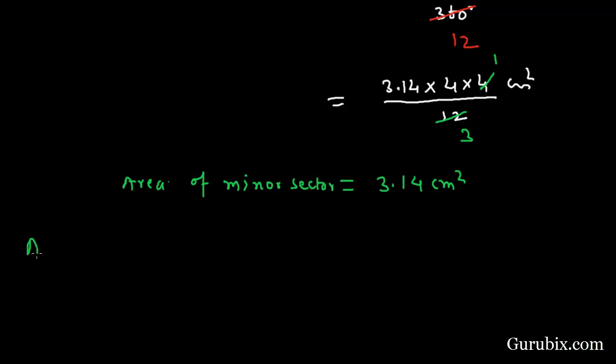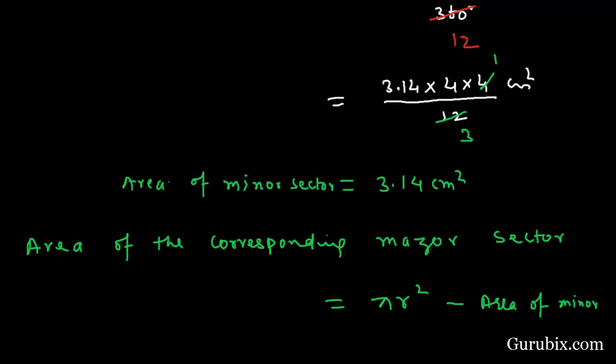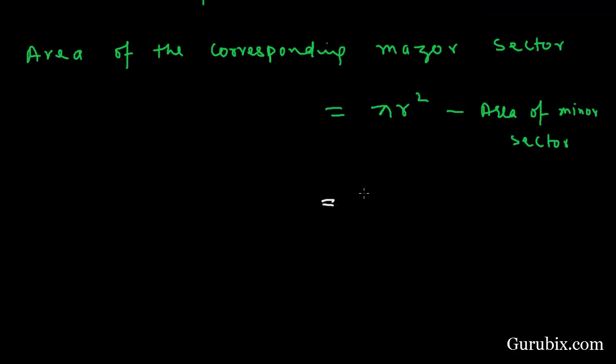Now we can find out the area of the corresponding major sector. This will be pi r squared minus the area of minor sector. So area of the circle will be 3.14 times 4 times 4, and the area of minor sector we have calculated is 3.14 centimeter squared.